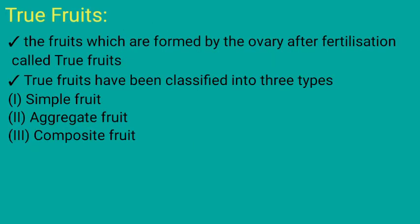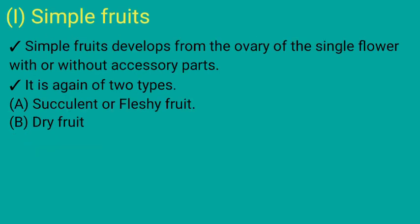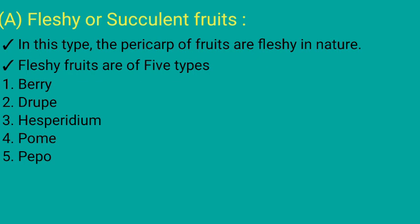Fruits which are formed from the ovary after fertilization are called true fruits. True fruits have been classified into three types: 1. Simple fruits, 2. Aggregate fruits, 3. Composite fruits. Simple fruits develop from the ovary of a single flower with or without accessory parts. Simple fruits are again classified into two types: 1. Fleshy or succulent fruits. Fruits which contain a fleshy pericarp are called fleshy or succulent fruits.